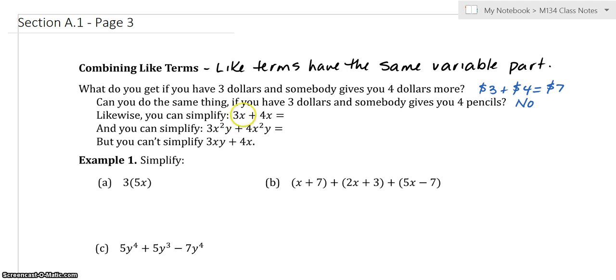So likewise when you have the same variable part you can simplify. So you can only combine like terms. That's why it's called combining like terms. So this would be 7x. The same thing here. If you notice with the same powers x squared y, x squared y has the same variable parts. So three of something plus four of the same is seven of that something.